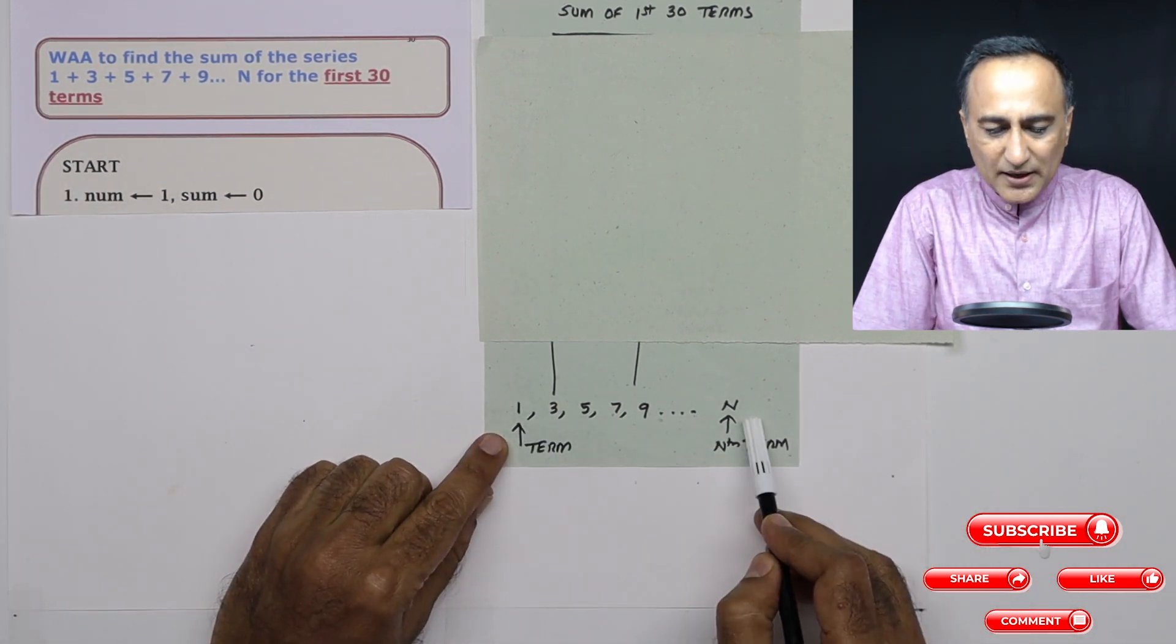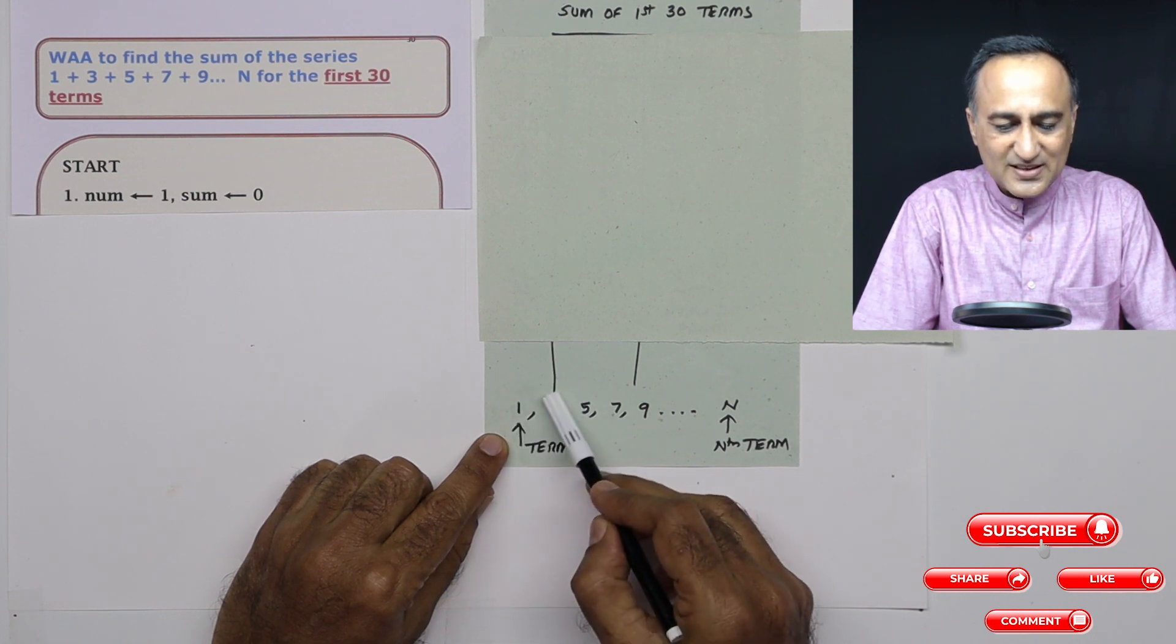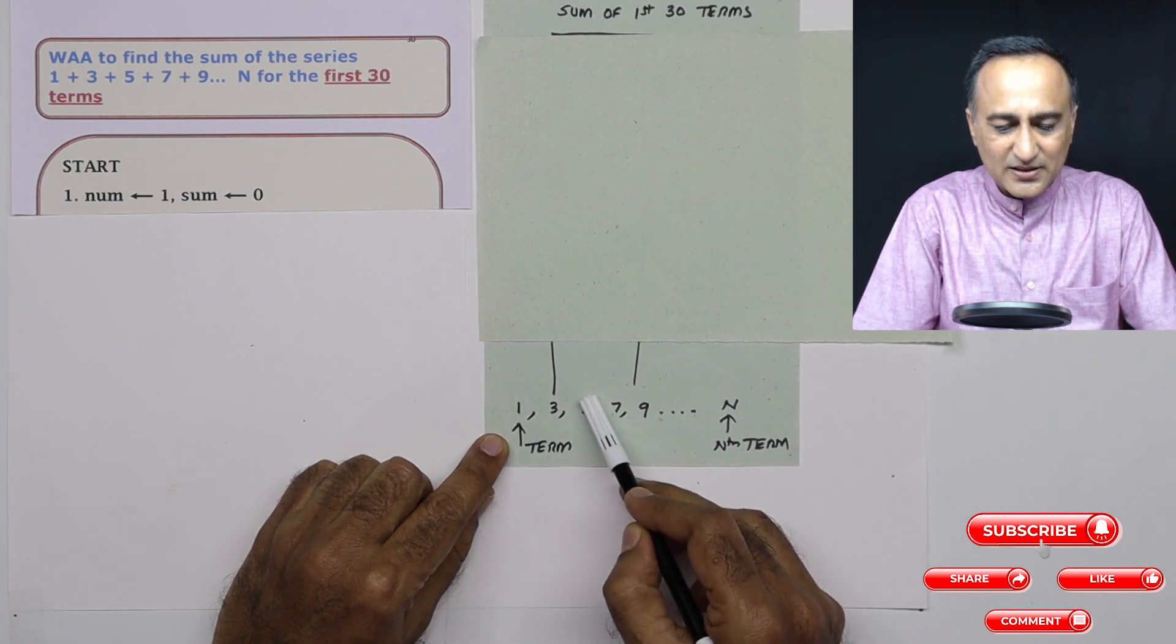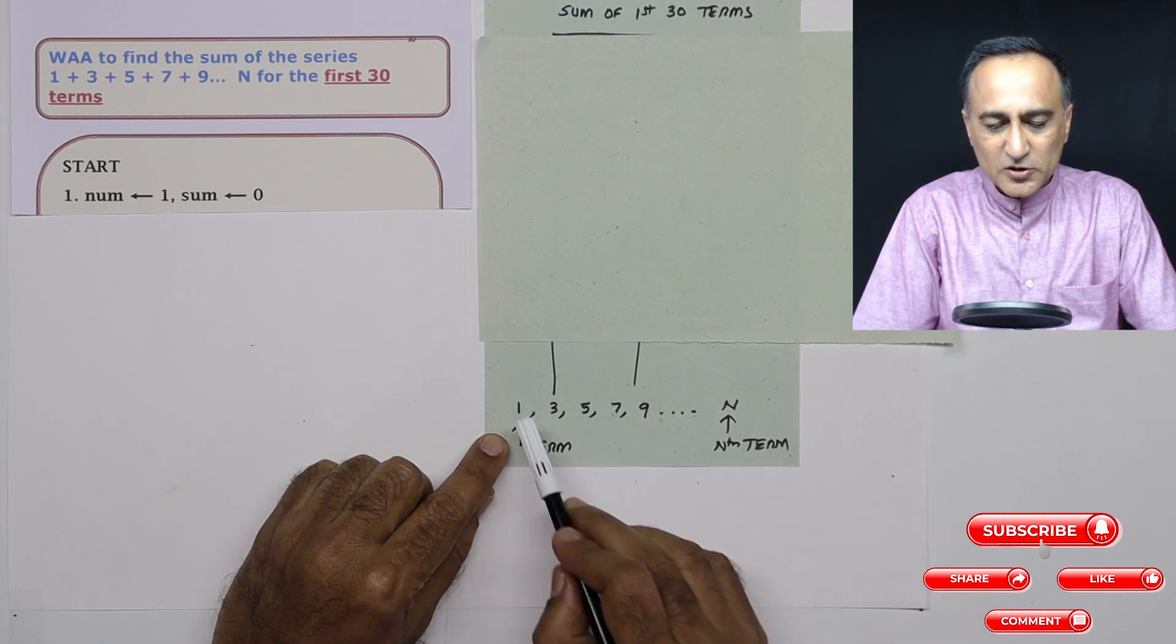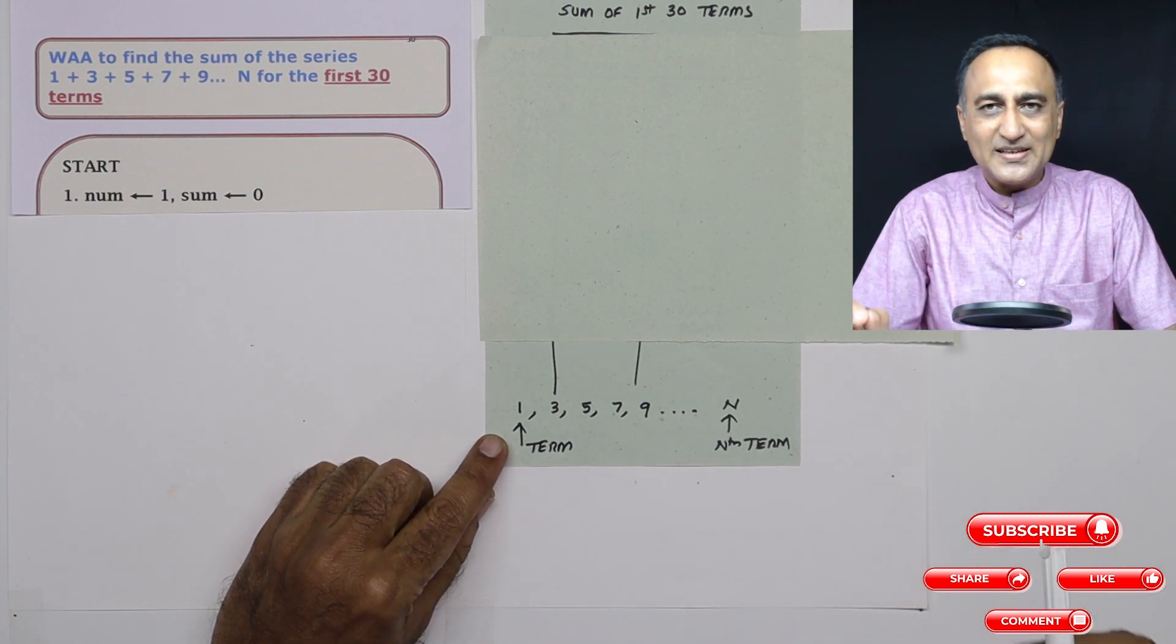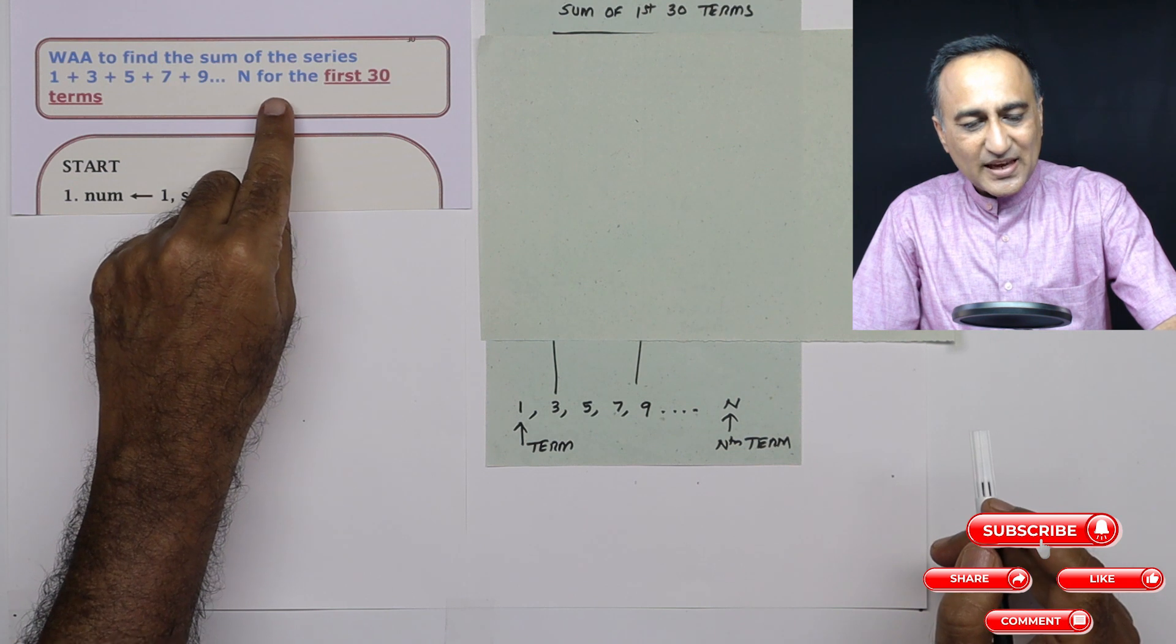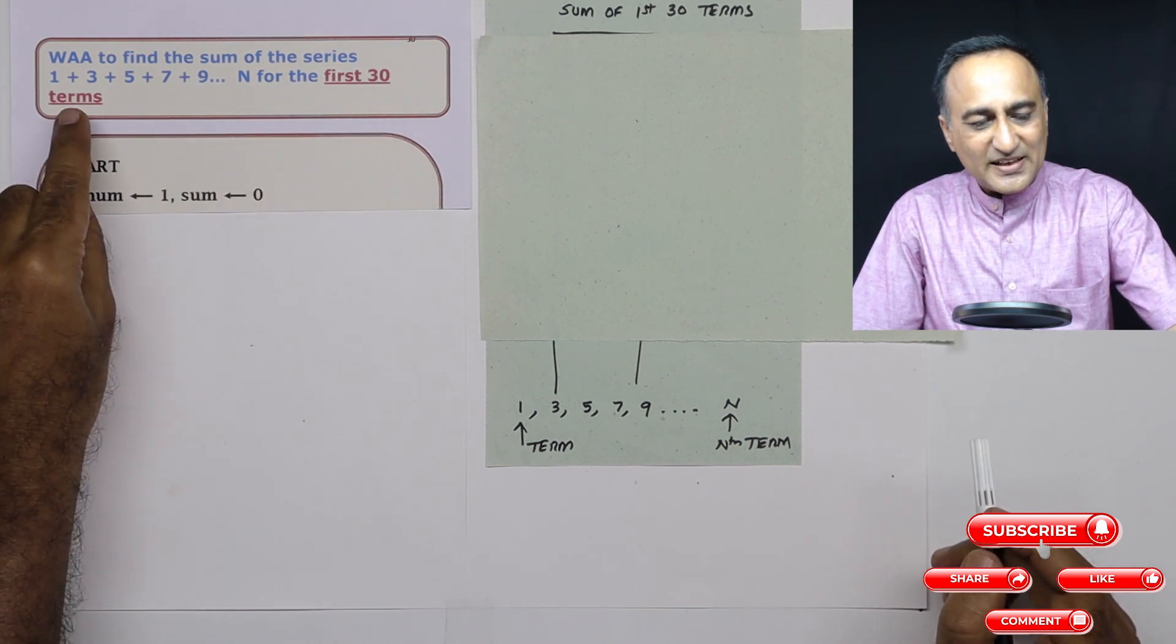So if you look at this 1 to n, this is called as the first term, this is the second term, third term, fourth term, this is the nth term. So each of these individual numbers are called as terms. So what he is trying to tell you is calculate the sum of the series for the first 30 terms.